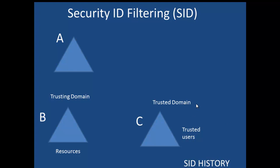Let's take a look at the scenario here. We have domain A, domain B, and domain C. Domain B is the trusting domain — the domain that has all the resources. Domain C is the trusted domain — the domain with users who want to access the resources in domain B. Now, let's say in domain A we have some users who need to be migrated to domain C. Once those users are migrated to domain C, they will get a new security ID.